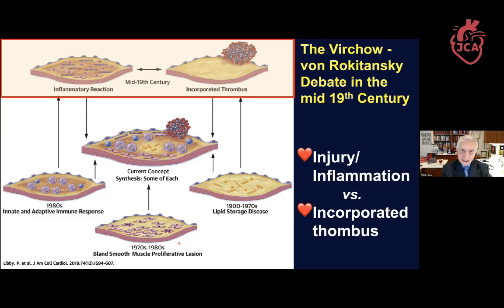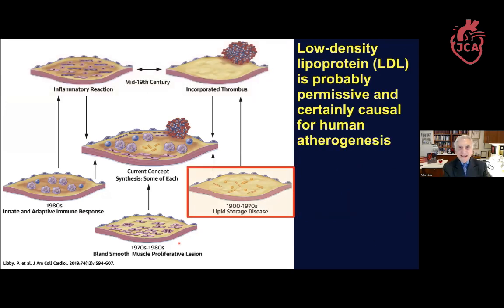Von Rokitansky took another view, and he thought that the atheroma arose by incorporation of thrombi. That was the hot debate of the mid-19th century. Then the era of chemistry arose, and it was found that cholesterol is a component of the atherosclerotic plaque by Adolf Windaus, and that you could feed animals a diet enriched in cholesterol and saturated fat — this was in rabbits by Anitschkow and Chalatow. So the focus for many decades was on atherosclerosis as a lipid storage disease.